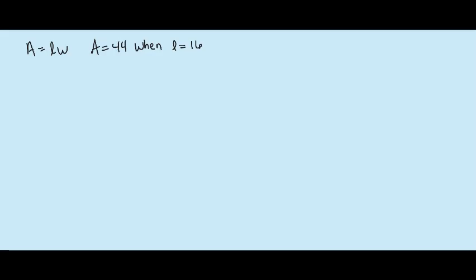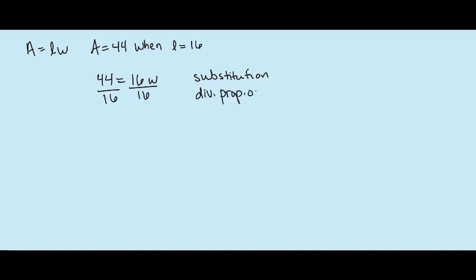If we are given the formula Area equals Length times Width, and the area is 44 when the length is 16, we're asked to find W. I'm going to substitute: 44 equals 16 times W. This was substitution. Now I'm going to divide by my coefficient — that's the division property of equality — and that leaves me with 44 over 16 equals W. They're both divisible by 4, so I divide by 4 on both sides.